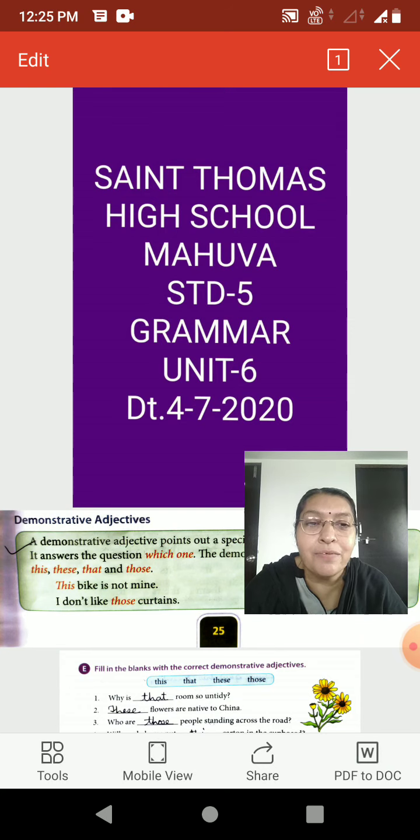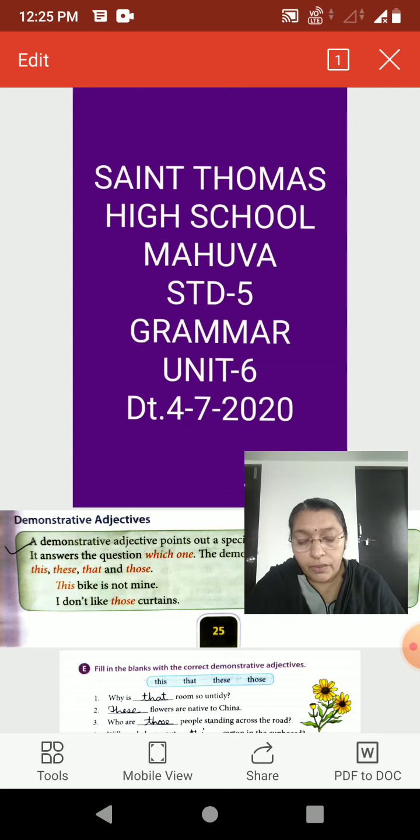We have started Unit 6 Adjectives and Comparison and we also knew about the types of adjectives. We also wrote down adjectives definition and you have done Adjectives of Quality, Adjectives of Quantity and Number. So, let us start Demonstrative Adjectives.